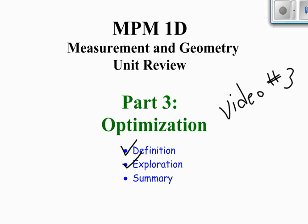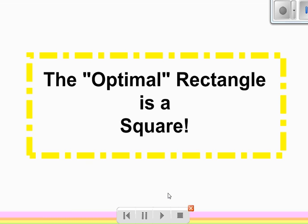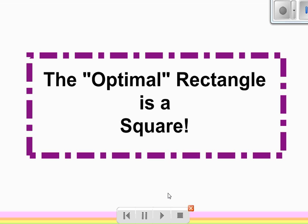It's part 3 of that unit where we look at optimization and this is video number 3 on optimization. Hopefully you've seen the other videos because you would have heard us define optimization from a mathematics point of view and do two explorations where we looked at trying to optimize rectangles. And this is what we discovered, that the optimized or optimal rectangle is in fact a square.